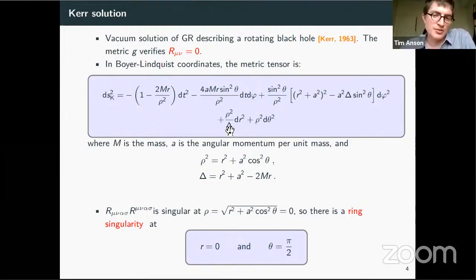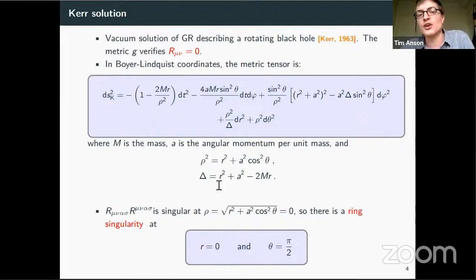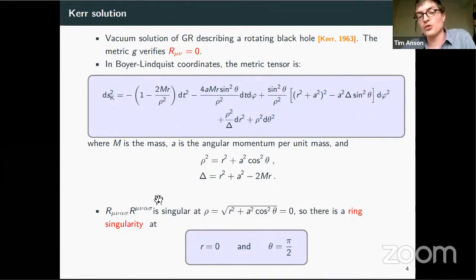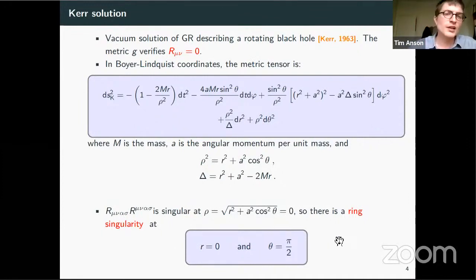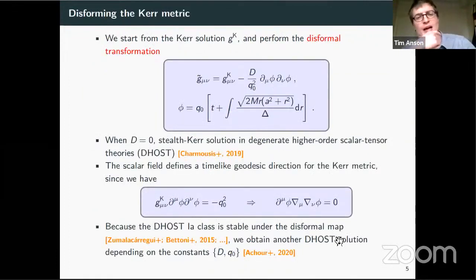When delta vanishes, the metric looks singular, but in fact these are only coordinate singularities. You can coordinate-transform to a system where the only singularity, which is also a curvature singularity, lies at rho equals zero — when r vanishes and the angle is pi over 2. This is referred to as the ring singularity. So we start from the Kerr solution, which I call g_K, and this is our starting point.